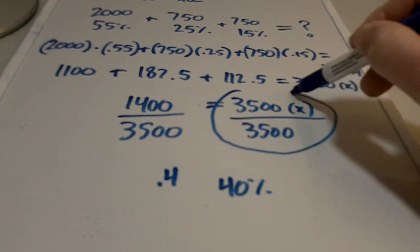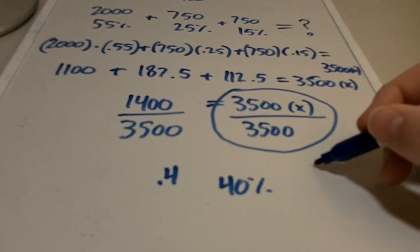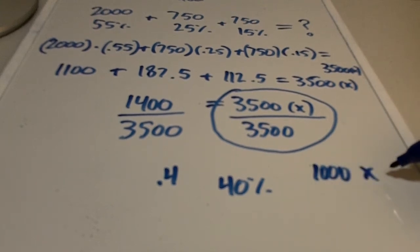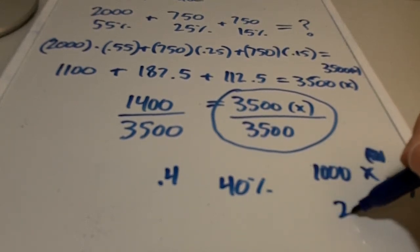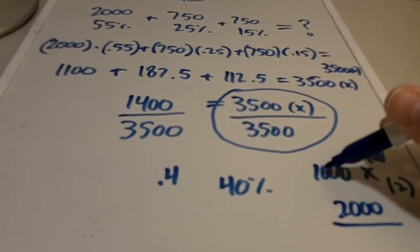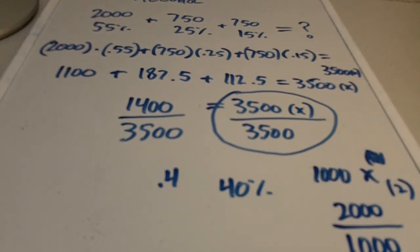And just to kind of show you why this works right here. Let's say that we had 1,000 times x, and x was actually, we'll say, 2. So if we were to multiply those together, that would be 2,000. And then remember, we're going to be dividing by the coefficient, which in that case was 1,000. So dividing by 1,000, 2,000 divided by 1,000 equals 2. That's where we find out what x is.